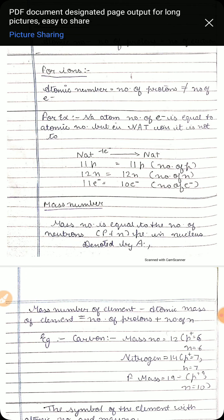For carbon, atomic number is 6, so number of electrons is 6 and number of protons is 6. Electronic configuration will be 2, 4. The number of valence electrons is 4, so the valency of carbon will also be 4.